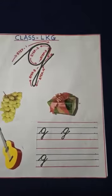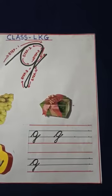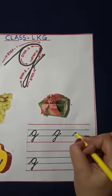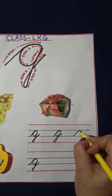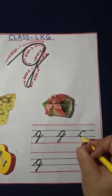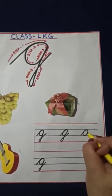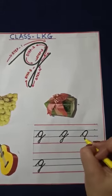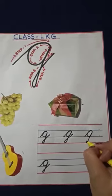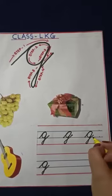First of all, keep your pencil on this line. Now make a slanting line towards up and make a curve. Then come back from the same curve and go up. Join the curve. Come back down in a slanting way to touch the bottom line, then go up in a slanting way like this.